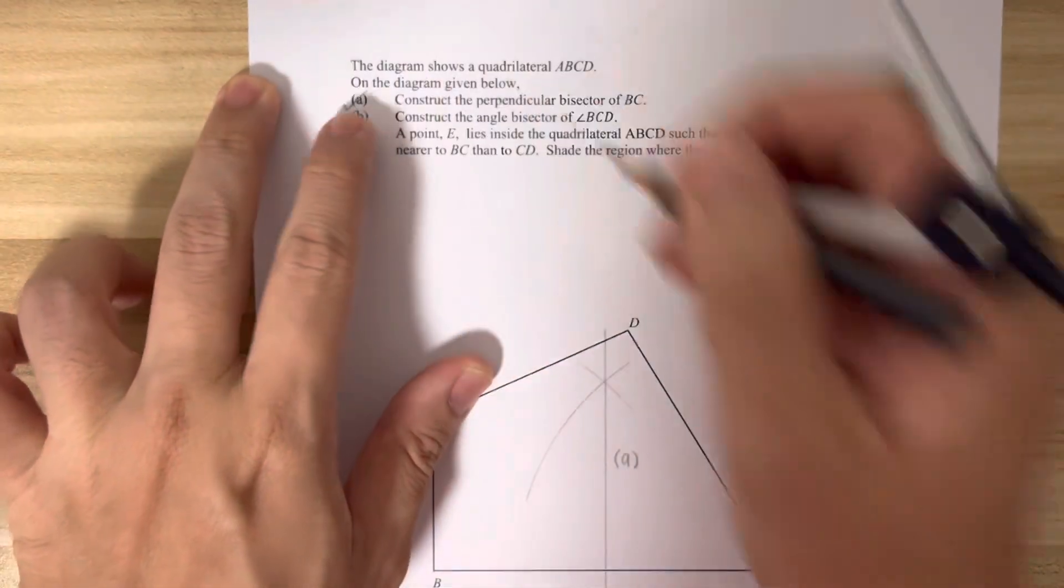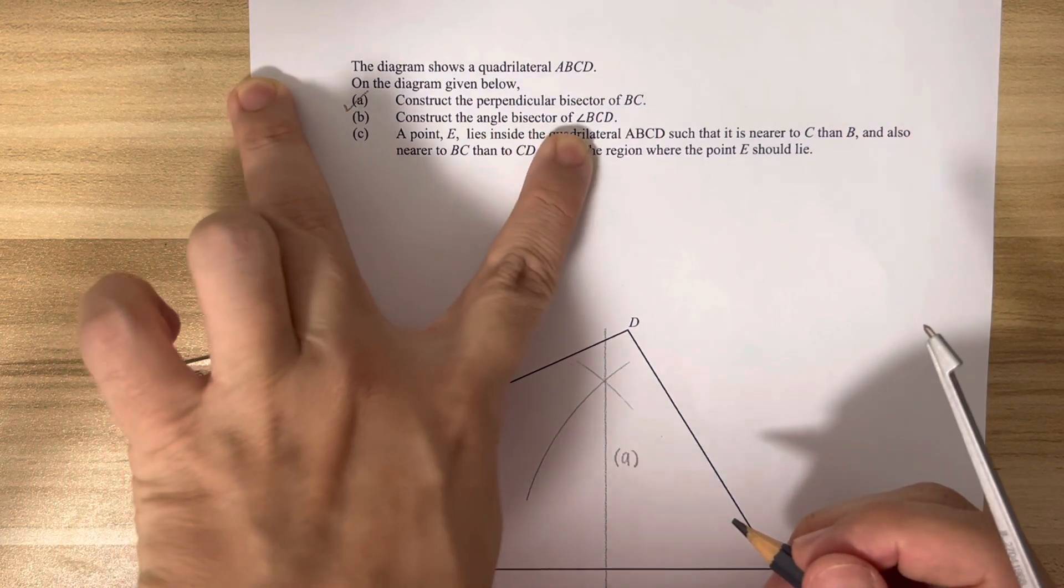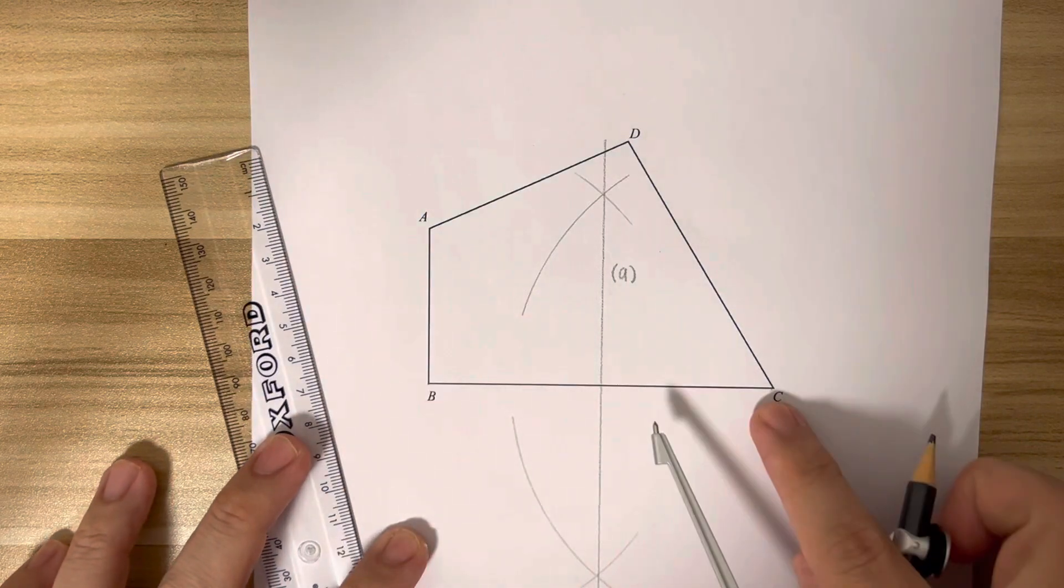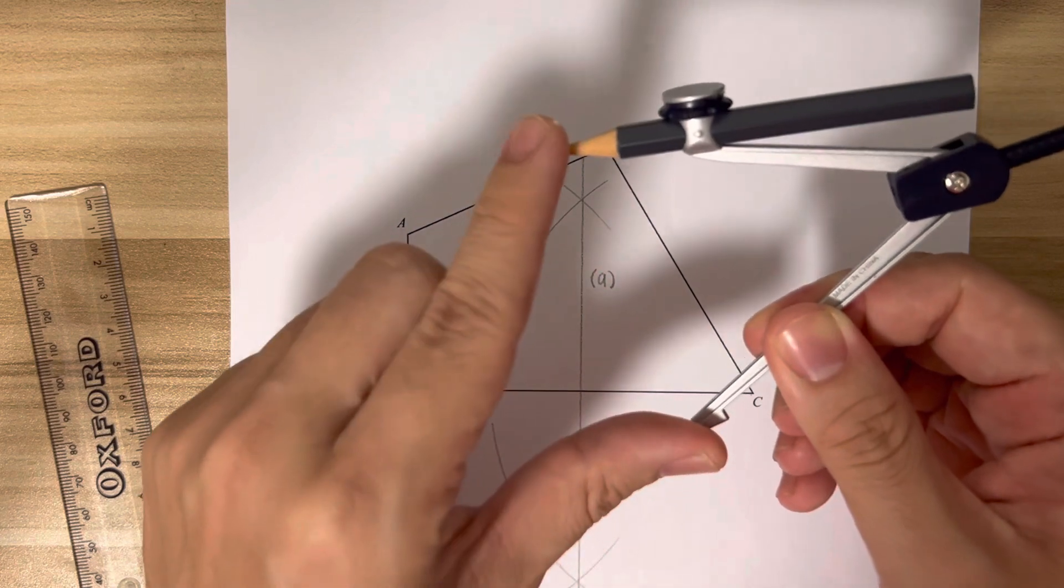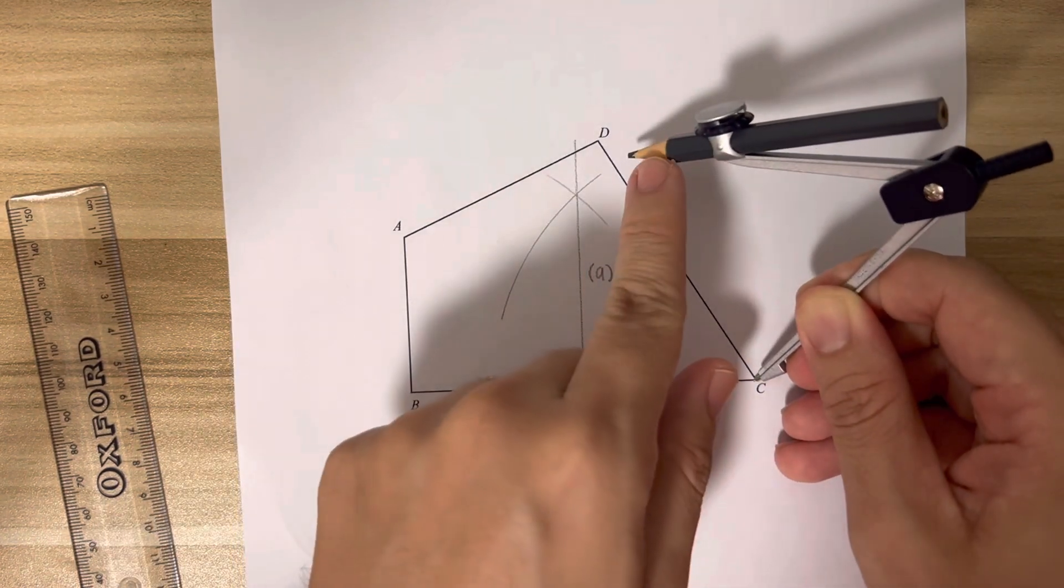Part B: construct the angle bisector of angle BCD. BCD, it is this angle. So at the angle, we are going to place the pointer tip here, and do make sure that this...